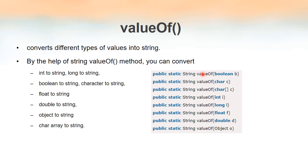This is clearly an example of method overloading. The method name remains the same — valueOf — but only the parameter list is different. So there is no need for us to remember different methods to convert, say, boolean or character values. This is the greatest advantage of method overloading: we can just remember one method name to convert all types of data into a string, and the method name is valueOf.